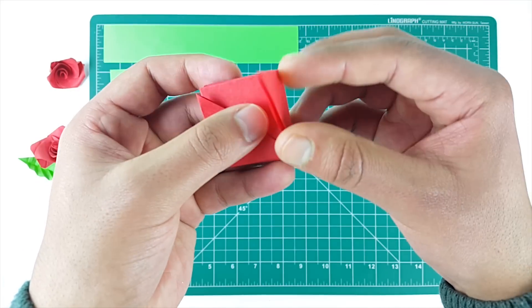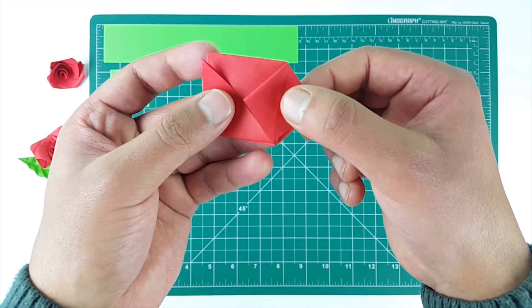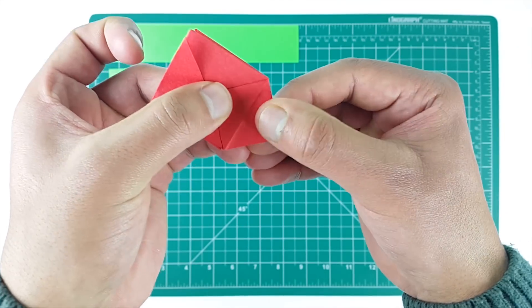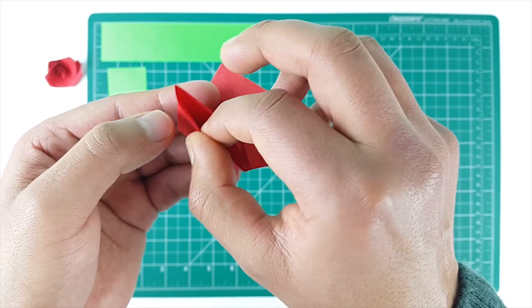Now open this edge and insert your finger in this pocket. Now meet the upper edge with the lower to reveal this square shape. Repeat the same for other three parts.